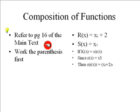Let's look at page 16 of the main text. We always want to work the parentheses first. r(x) equals x squared plus 2, s(x) equals x cubed. If k(x) equals s(r(x)), since r(x) equals x cubed and s(r(x)) equals x squared, then this would be x squared plus 2 to the 3rd power.